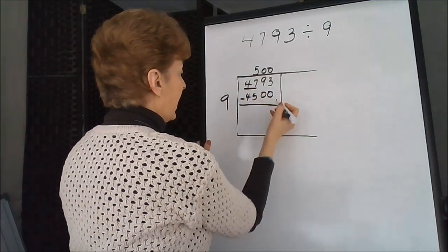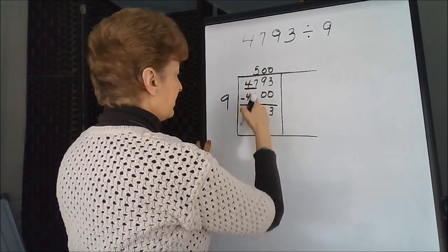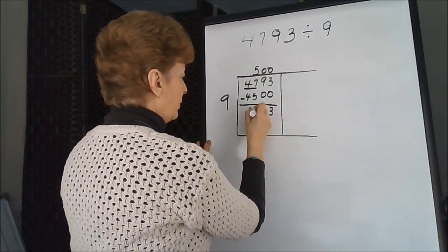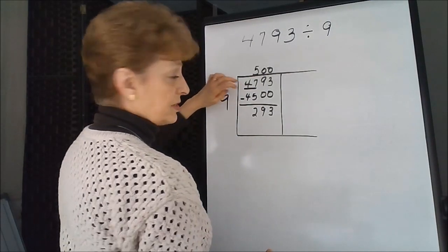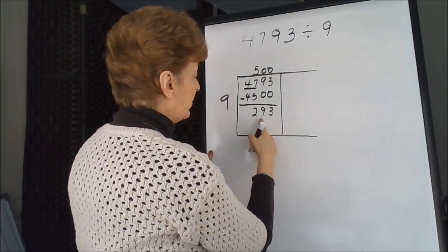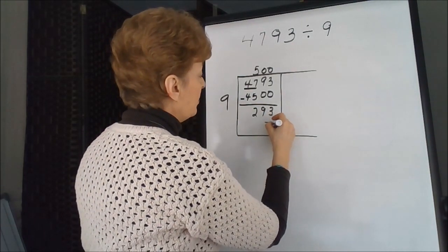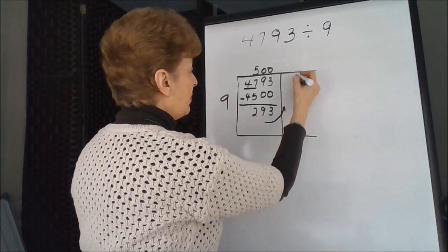Here are our two zeros, and 9 times 5 is 45. And subtract right in the box. 3, 9, 7 take away 5 is 2, and of course the two 4s are 0. So our remainder is 293, which is higher than 9, so we're going to bring that to the next box.